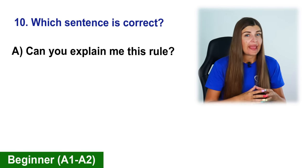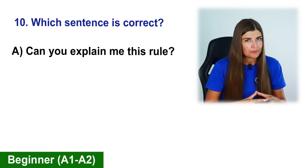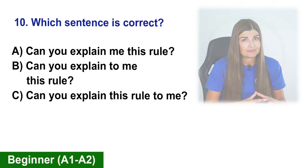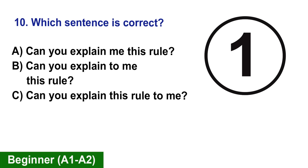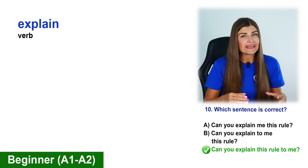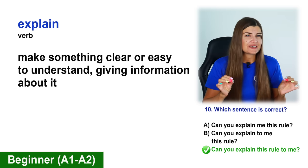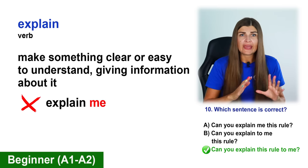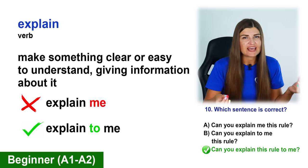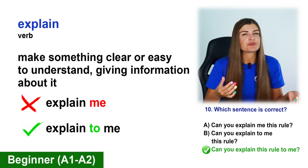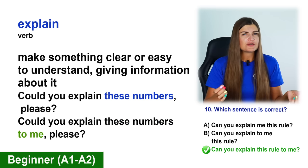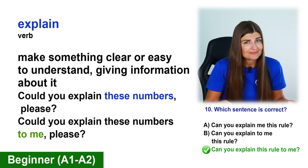Which sentence is correct? A. Can you explain to me this rule? B. Can you explain to me this rule? C. Can you explain this rule to me? The correct option is C. We use the verb explain to mean make something clear or easy to understand. We cannot say explain me — we have to say explain to me. We can use explain with a direct object or with a direct object and a prepositional phrase with to. For example, could you explain these numbers to me please?